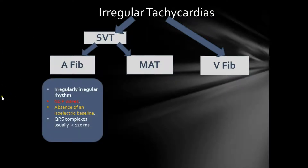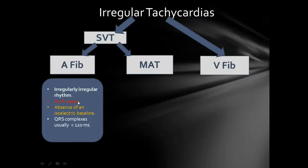The ECG criteria for atrial fibrillation are the following. First, you will have an irregularly irregular rhythm — in other words, it's complete chaos. The second thing is you do not have distinct P waves; you simply have a chaotic fibrillatory baseline. And therefore, you do not have an isoelectric baseline anywhere on the ECG.